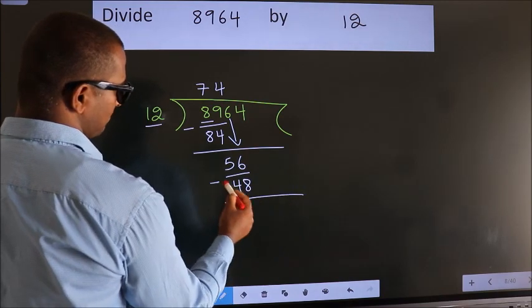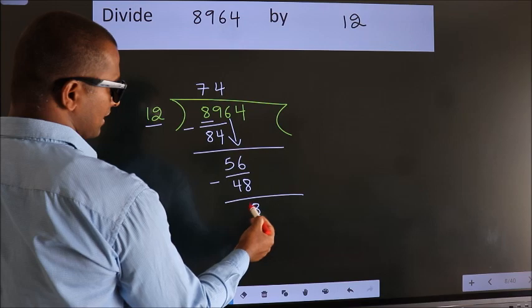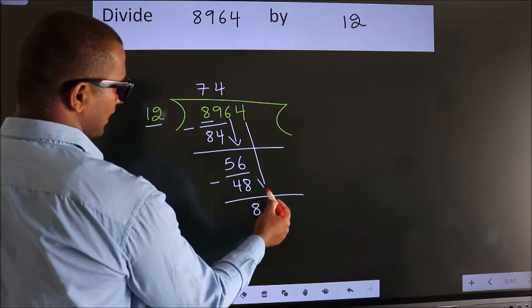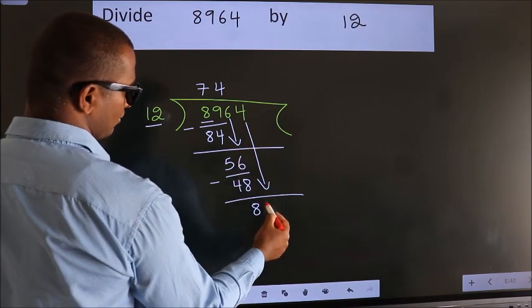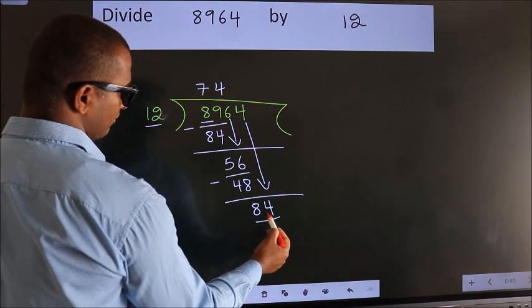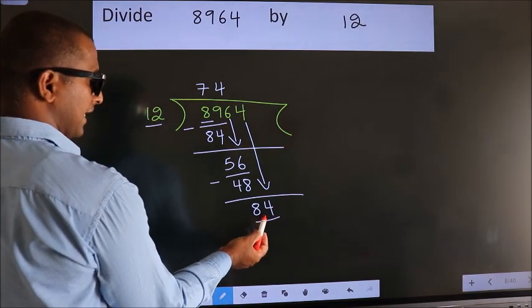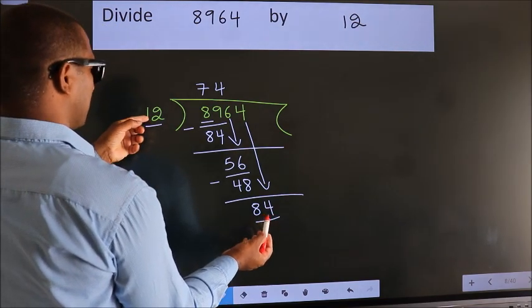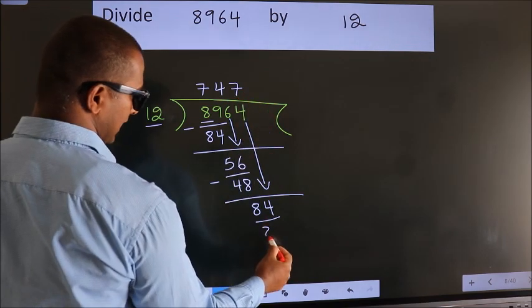Now we subtract. We get 8. After this, bring down the beside number. So, 4 down. So, 84. When do we get 84? In the 12 table: 12 times 7 is 84.